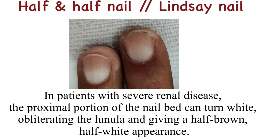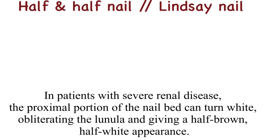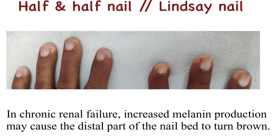Half and half nail: In patients with severe renal disease, the proximal portion of the nail bed can turn white, obliterating the lunula and giving a half brown and half white appearance. In chronic renal failure, increased melanin production may cause distal parts of the nail bed to turn brown.